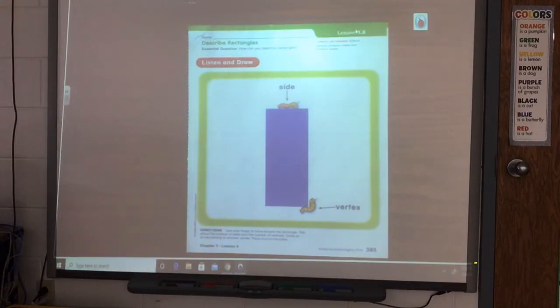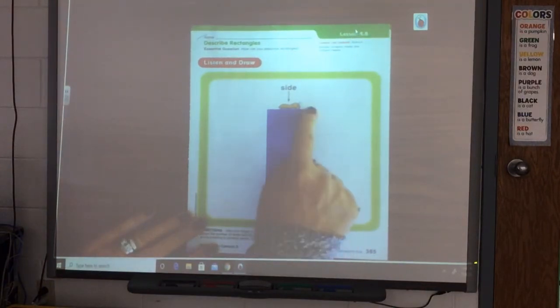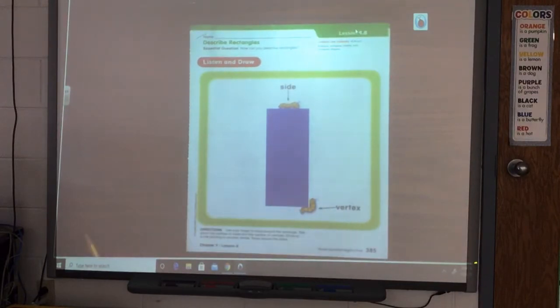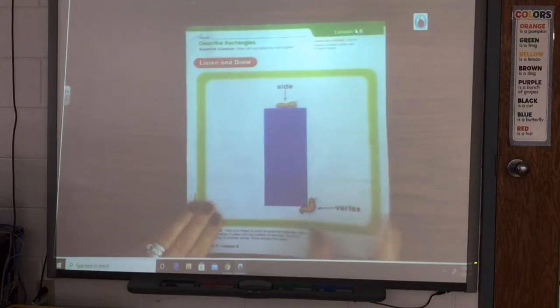All right, so the directions say use your finger to trace around the rectangle. You just go down, over, up, over, and then talk about the number of sides and vertices, which we already did. One, two, three, four sides. One, two, three, four vertices. That is a rectangle.